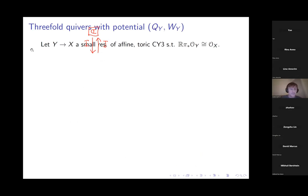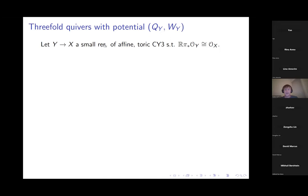Now I'll explain how to build a quiver associated to a threefold, without proving why it's related to coherent sheaves. Following work of Bridgeland, we consider a small resolution — by small I mean the dimensions of the fibers are at most one — of an affine Calabi-Yau threefold, with the mild additional technical hypothesis that the derived pushforward of O_Y is O_X with no higher cohomology.